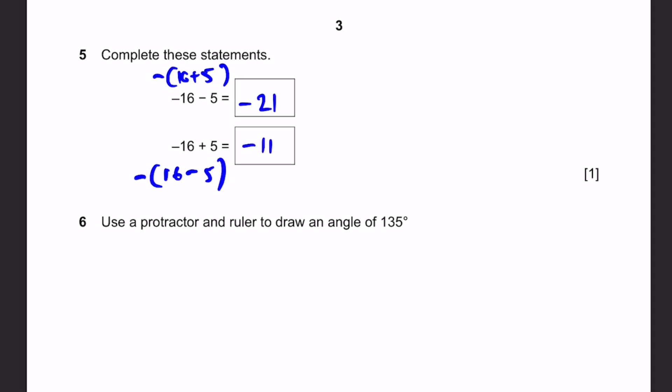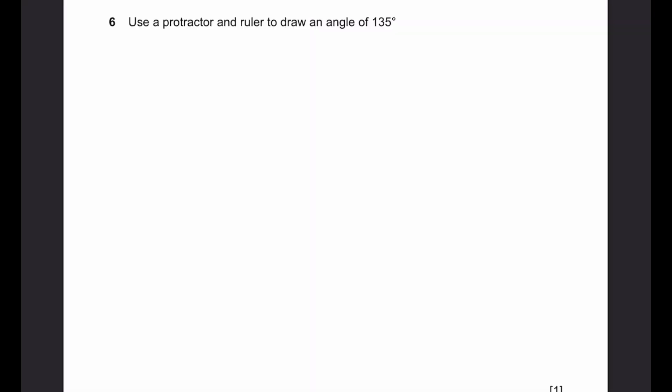Question 6, use a protractor and ruler to draw an angle of 135 degrees. I don't have a protractor and ruler on the application I'm using, but then I can show you how to do it. So we can draw a flat horizontal line using a ruler. And let's just mark the points or the end points of the line A and B. Now, to draw an angle of 135 degrees, we can measure, let's say from the point A, we can measure 135 degrees in any direction.